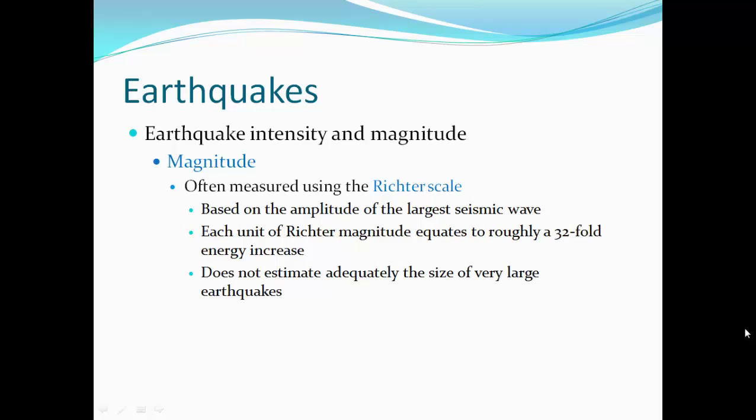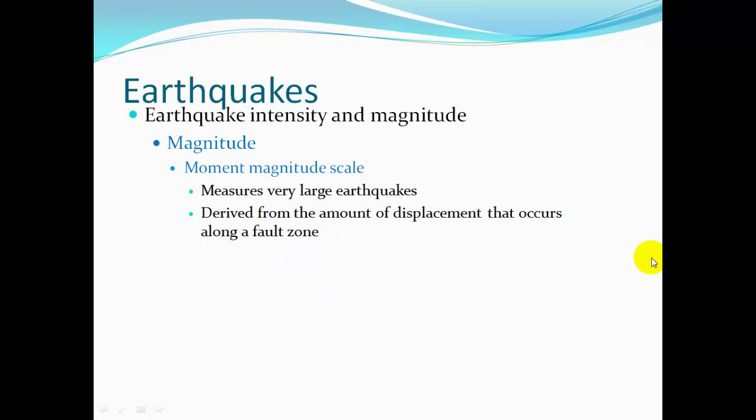An earthquake of Richter scale magnitude 2 is about 30 times stronger than one of magnitude 1. However, for very large earthquakes of magnitude 8 or 9, the Richter scale doesn't adequately describe the size. So we use the moment magnitude scale, which measures very large earthquakes and is derived from both the amplitude of the strongest waves and the amount of displacement that occurs along the fault zone.